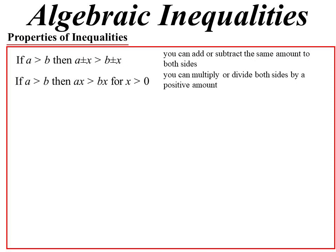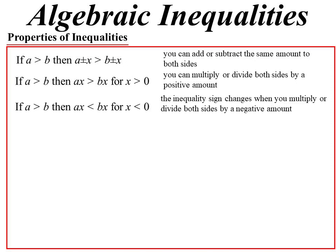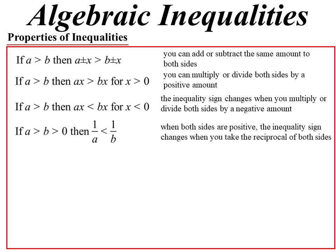If A is greater than B, we know that if we multiply by a positive number, that inequality sign is not going to change. But if we multiply by a negative number, the sign will change — that's the rule: if you change the sign, you change the sign.